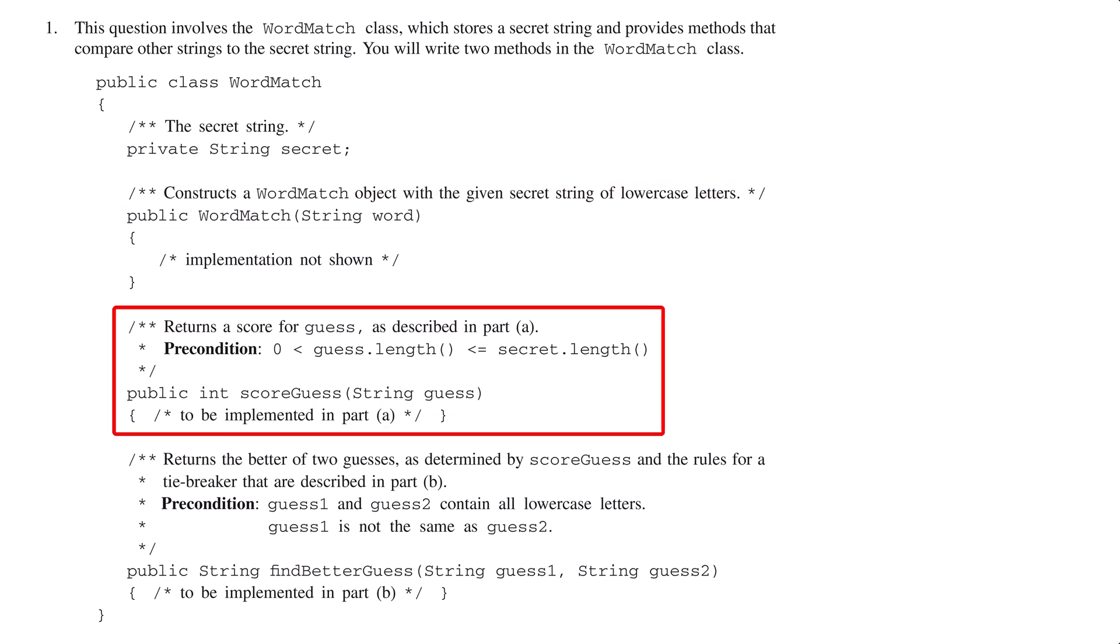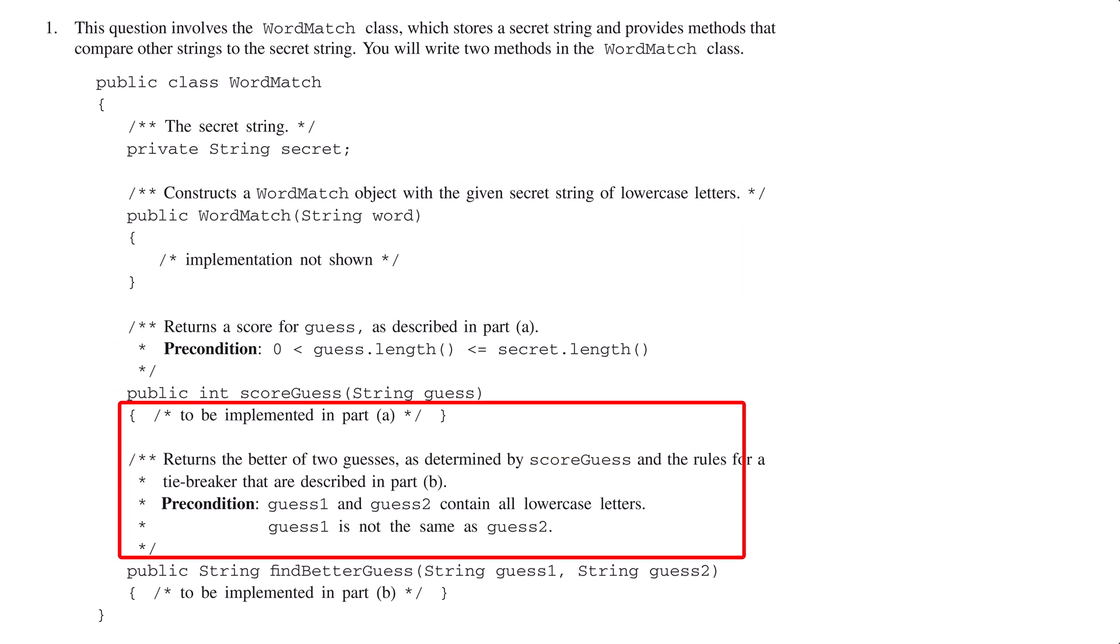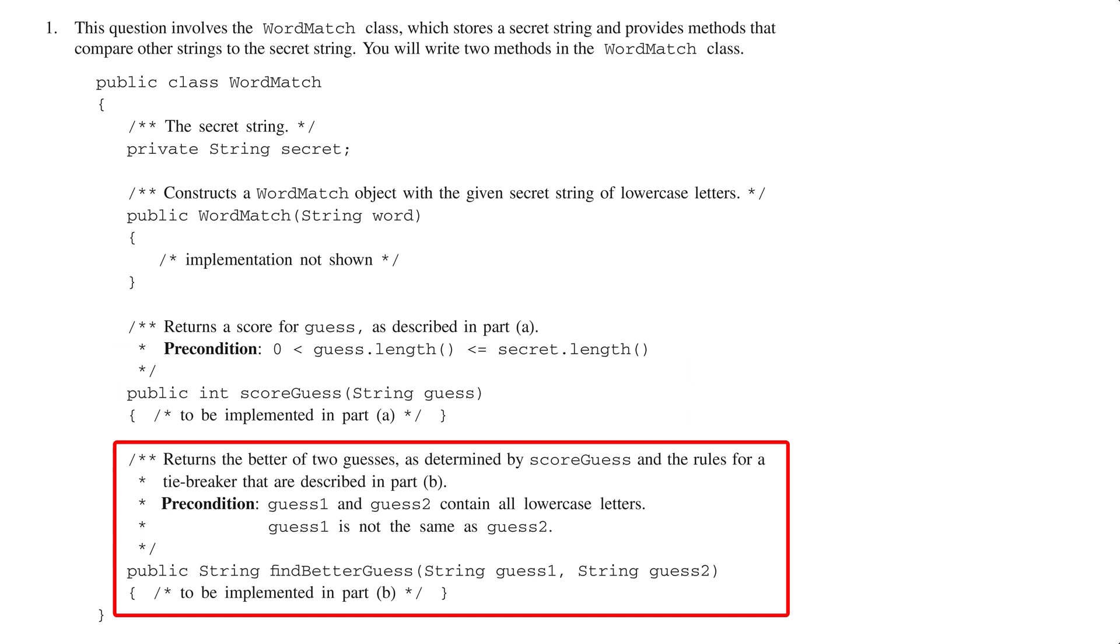The first method, ScoreGuess, calculates a score for a given guess. The second method, FindBetterGuess, compares two guess strings and determines which one is better. To solve the problem, we need to implement the ScoreGuess and FindBetterGuess methods according to the instructions that follow.